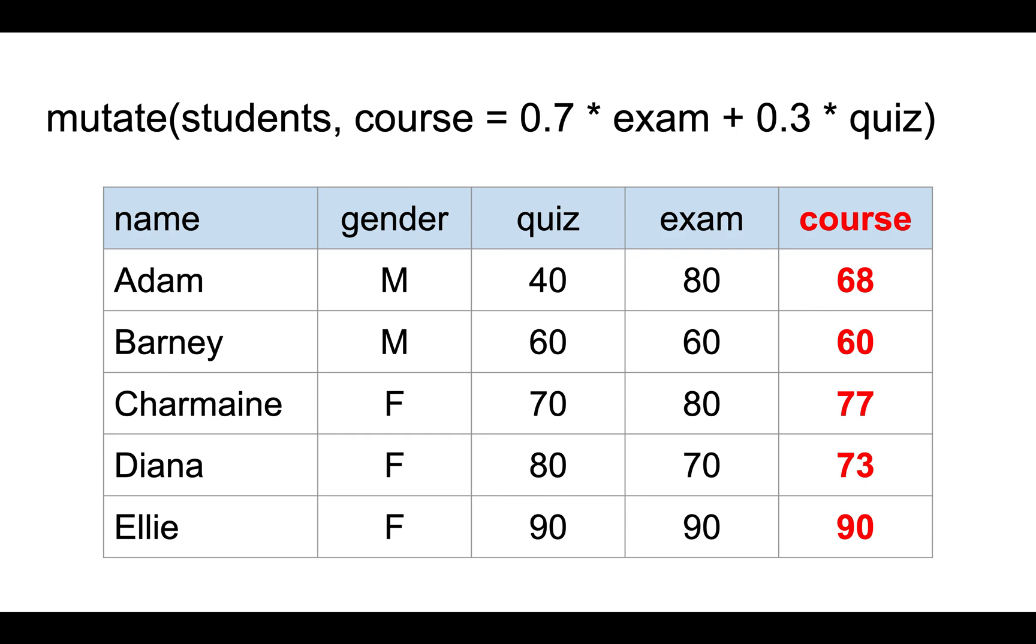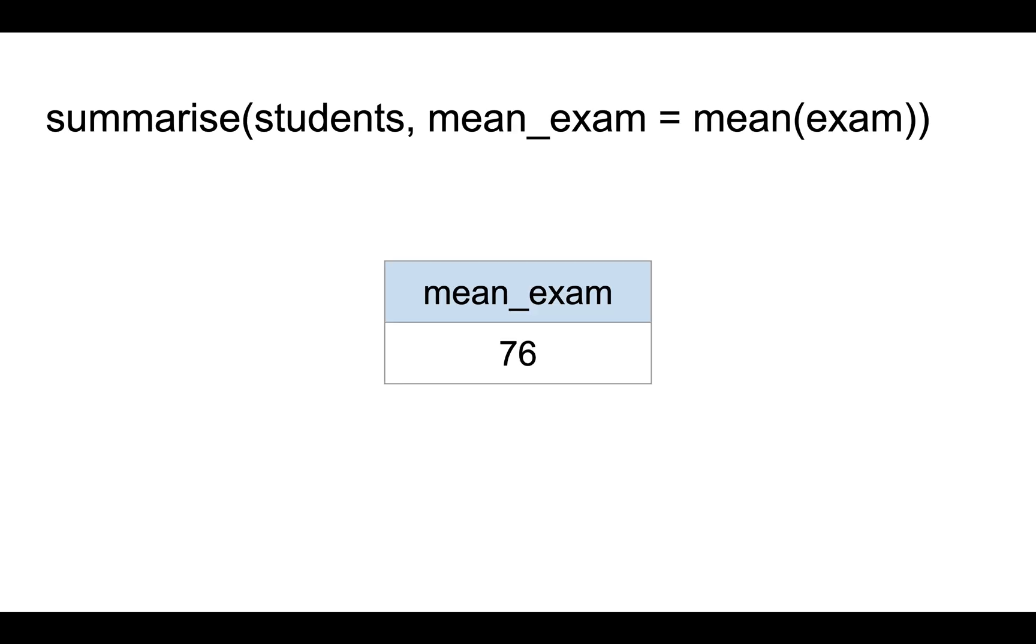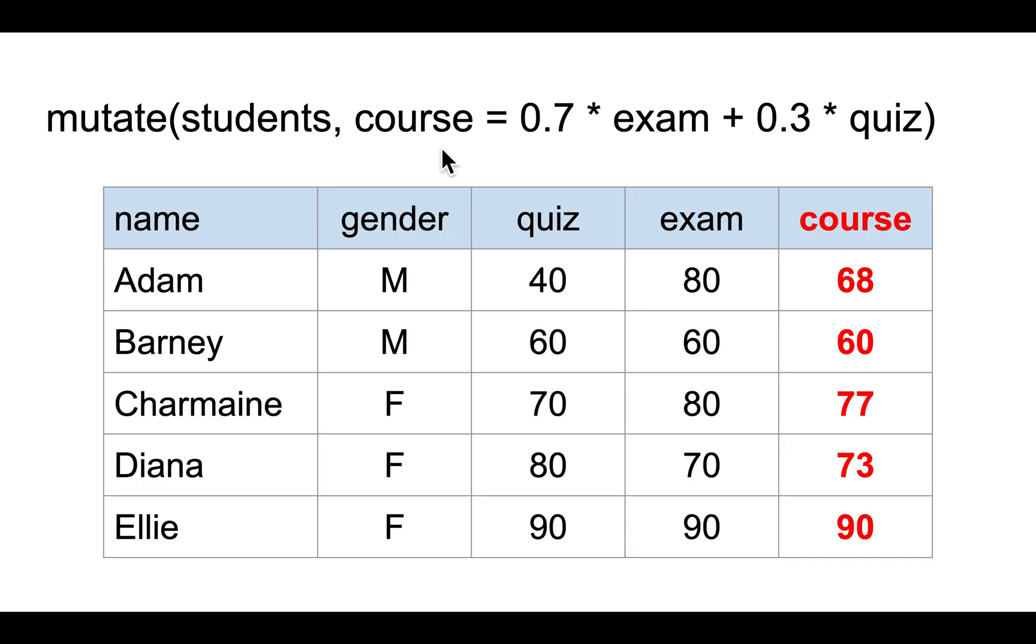The mutate function allows you to create a new column. For example, let's say the weighting of the quiz is 30% and the weighting of the exam is 70%. Then the overall course score could be calculated using this equation, and it creates a new column called course with the correctly computed course scores.